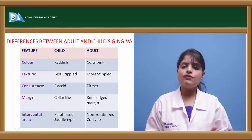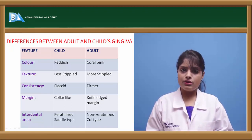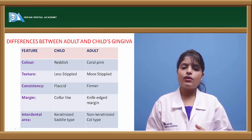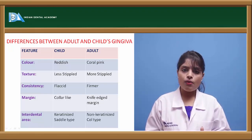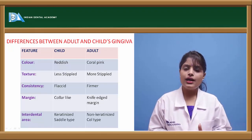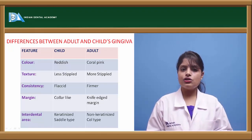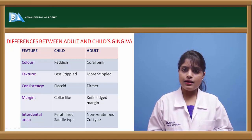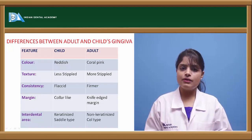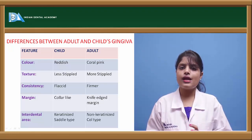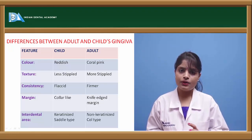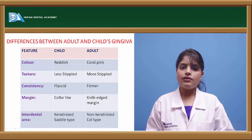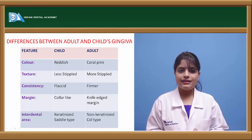The texture of gingiva in children is less stippled. Stippling refers to the depressions and protuberances present on the surface of the gingiva, formed due to indentations of the connective tissue into the epithelium. The main function of stippling is reinforcement of the gingiva. In children, the gingiva is less stippled — meaning fewer connective tissue protuberances. Stippling is responsible for a healthy gingiva, and its density is greater in adults than in children.